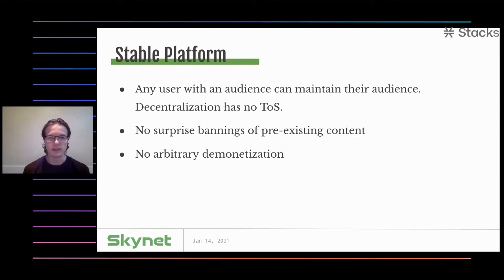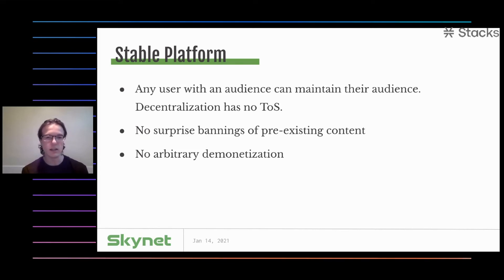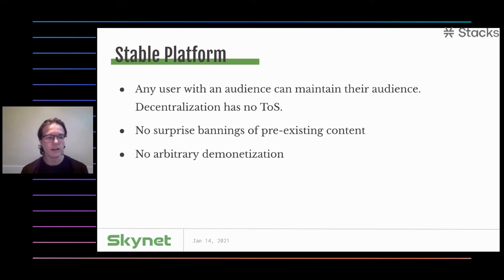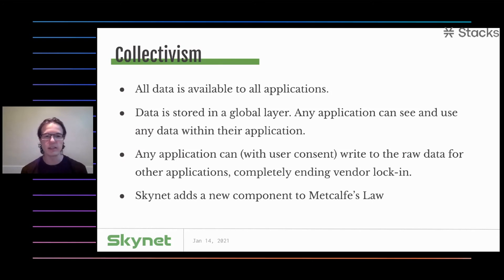Probably the biggest advantage of decentralization that people talk about today is the stable platform. You don't have arbitrary terms of service or rules that can get you kicked off a decentralized Twitter. There are no surprise bannings and no demonetization — if you have something that works and an audience that likes it, that thing can be depended on to continue existing into the future. The centralized internet just can't offer that to content creators. This is very important because we're talking about somewhere between a hundred thousand and a million people who make their entire income off content creation. We think the stable platform is critically important, and we don't want to lose everything else either — the final big thing is data collectivism.